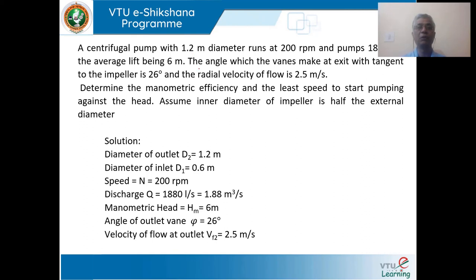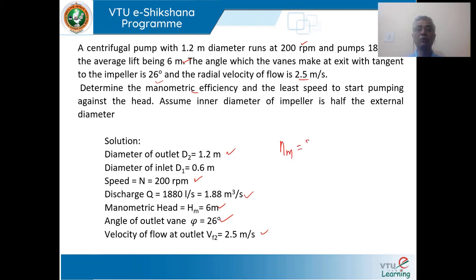A centrifugal pump with 1.2 meter external diameter, 200 rpm, pumps at 1880 lps — that is 1.88 meter cube per second. The average lift, that is the manometric head, is 6 meter. The angle which the vane makes at the exit of the impeller — the outlet vane angle psi — is 26 degrees, and the radial velocity (flow velocity) is 2.5 meter per second. Determine the manometric efficiency eta_m and the least speed for starting the pump, n_minimum.